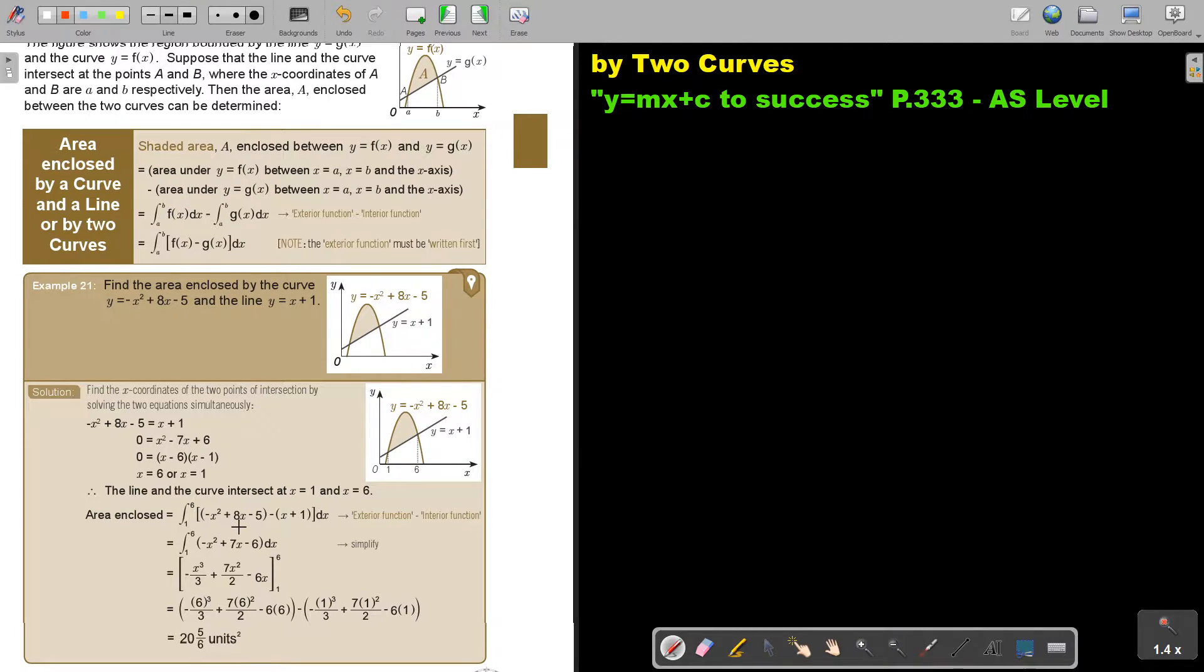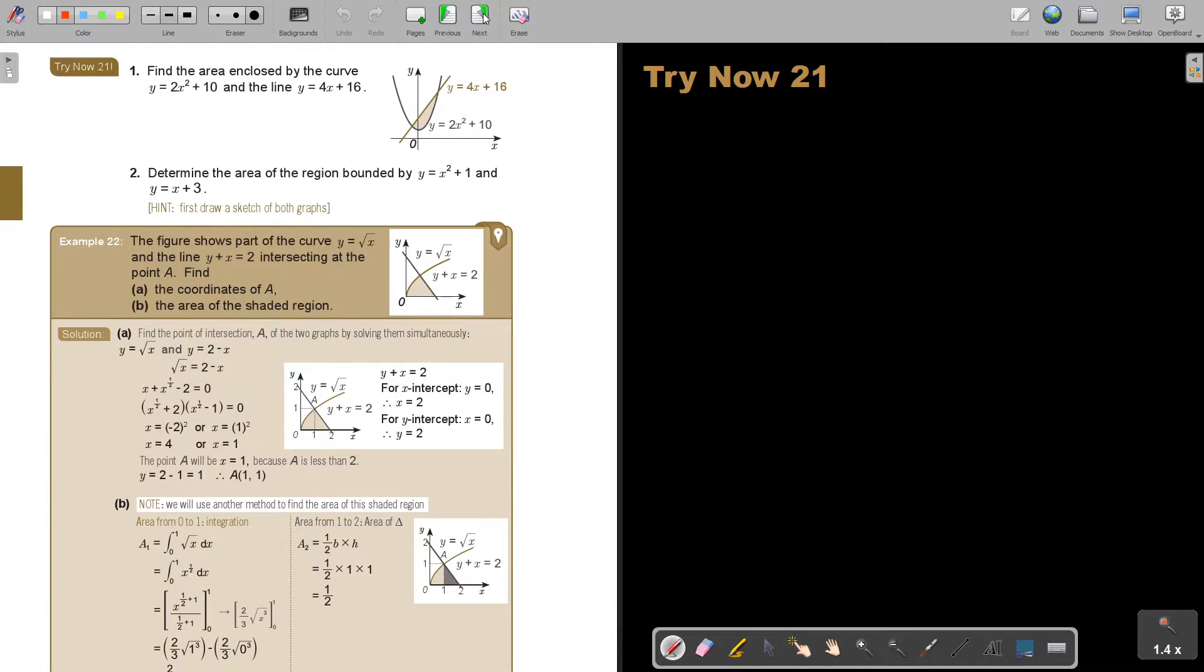And at first, simplify this. Before you integrate, simplify this. So multiply that negative in, add the like, subtract the like terms and get this. And now you can integrate and then you can substitute and find the answer. I'm going to let you, because this one is very obvious, I'm going to let you do number 2.